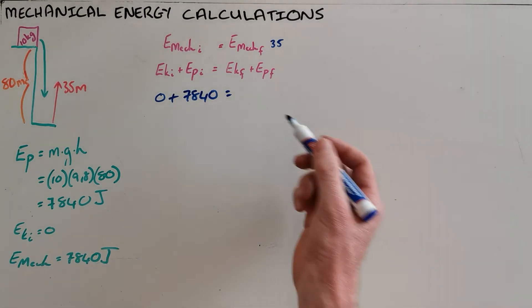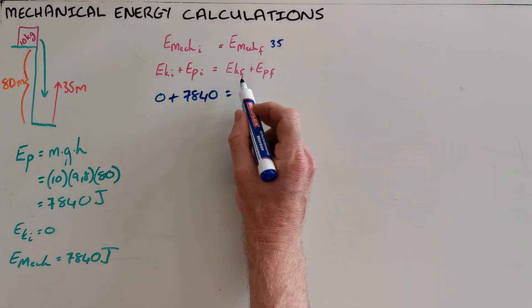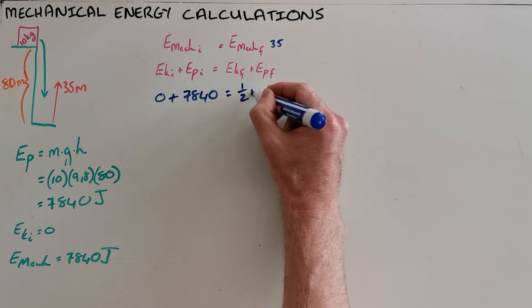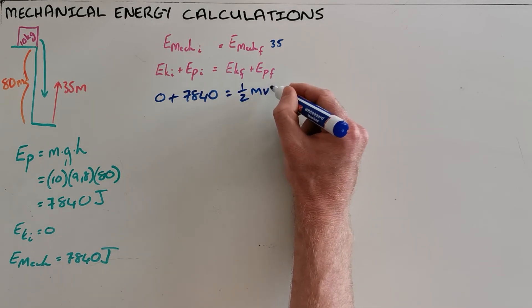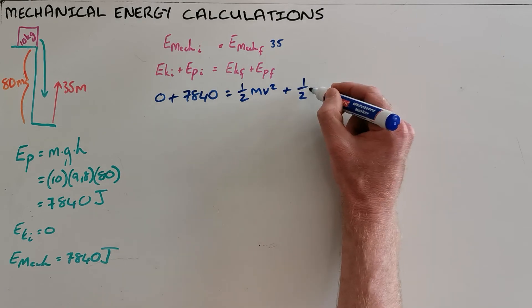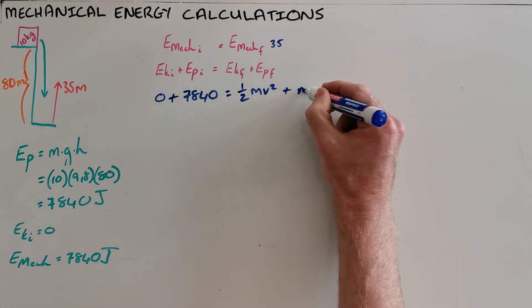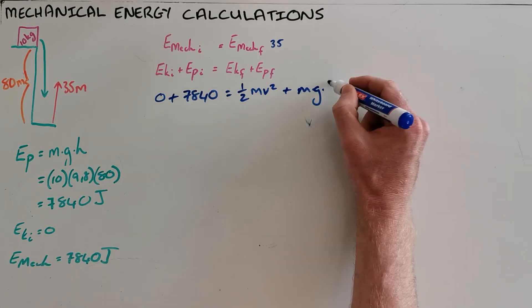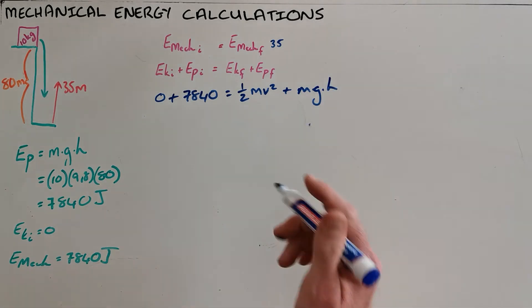And the potential energy as we've calculated was 7840, we can then use these two formulae to find out what the velocity or kinetic energy was at that point. We know that the kinetic energy is calculated as one half times the mass of the object multiplied by its velocity squared. Potential energy that remains is then the mass of that object multiplied by gravitation multiplied by its height above the ground.